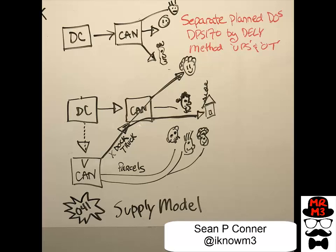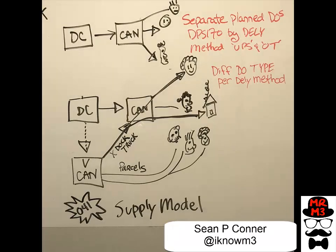Then what we're going to do is assign a different DO type per delivery method, all of this using the supply model. The end result is you're going to get a group of planned deliveries DPS 170 for one particular distribution order type.